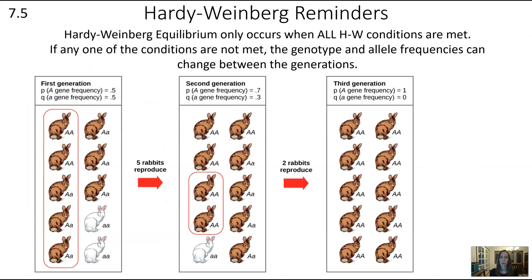As a final reminder, Hardy-Weinberg equilibrium only occurs when all of the conditions are met. If any one of those conditions is not met, the genotype and allele frequencies can change between generations — and that's evolution. Remember that Hardy-Weinberg equilibrium is the opposite of evolution. In real life, there's always change: you can't have an infinitely large population, you very rarely have complete isolation, and you very rarely have cases where all traits have exactly the same fitness. So Hardy-Weinberg equilibrium is really important in modeling — it sets a baseline of what the population would look like over time with no change, so we can compare real life to that idea and get a better sense of what's driving evolution.